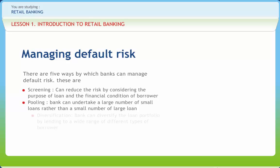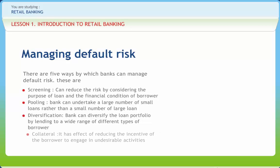Third is diversification: banks can diversify the loan portfolio by lending to a wide range of different types of borrowers. Fourth is collateral: a bank may ask for collateral or security to be provided by the borrower. If the loan then goes to default, the bank is able to sell the collateral and recover some or the entire loan.